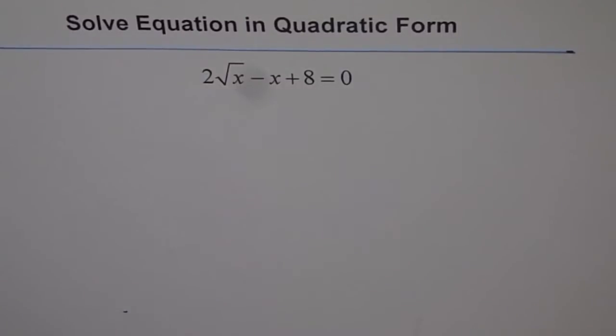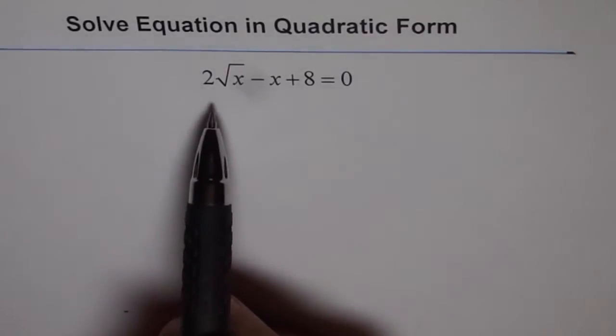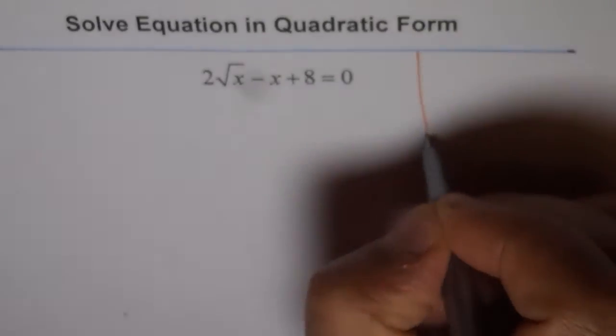Solve equation in quadratic form. We have an equation here which really does look like a quadratic equation. It is 2 square root x minus x plus 8 equals to 0. We can do some substitution and make it in quadratic form and then it will be easier for us to solve it. So let's do a substitution here.